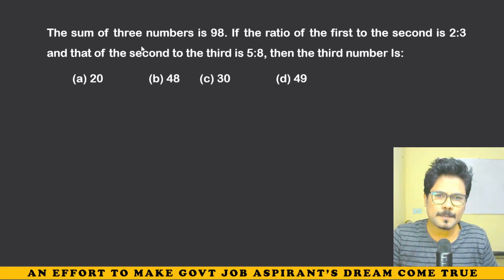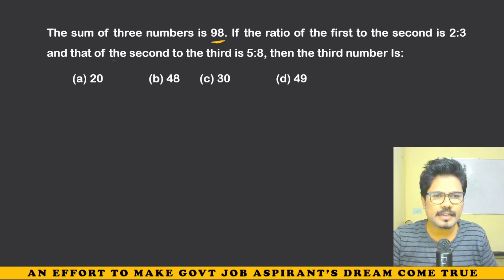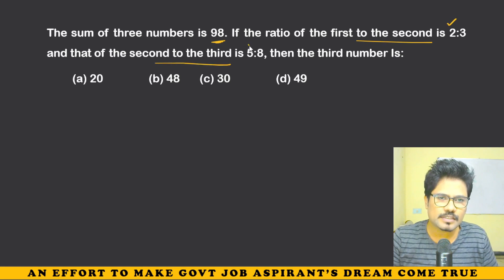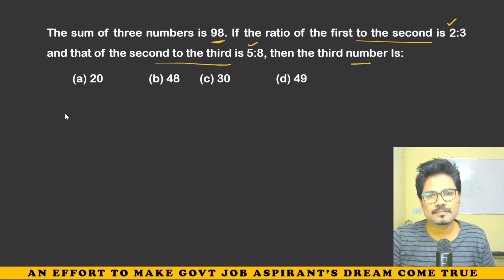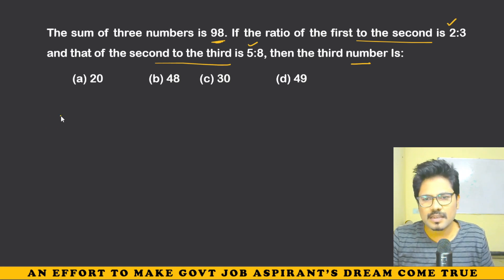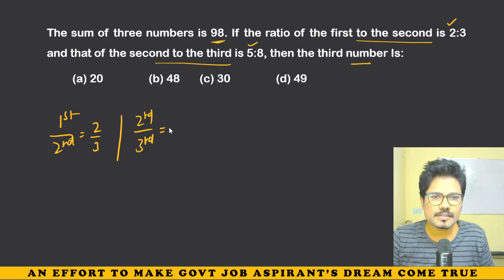These are easy questions. Sum of three numbers is 98. If the ratio of first to second is 2:3 and that of second to third is 5:8, find the third number. We have three numbers and the first to second ratio is 2 by 3, and second to third is 5 by 8.